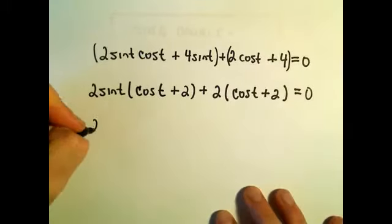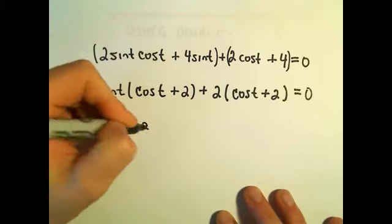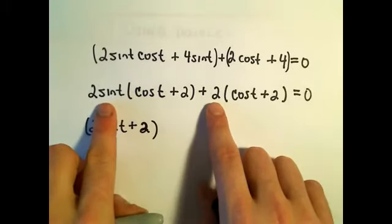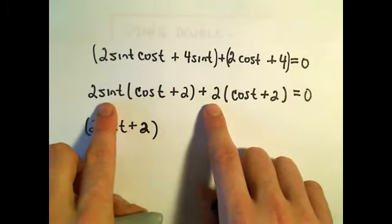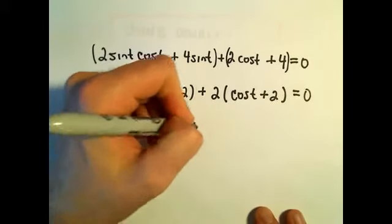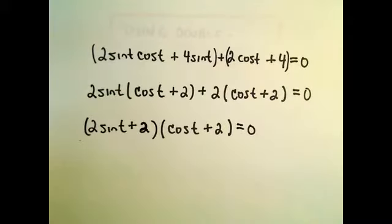And now when we do our factoring by grouping, we'll have 2 sine of t plus 2 in one set of parentheses. So again, recall, we take basically the stuff out front of the parentheses. We've got our cosine of t plus 2 equals 0 in our other set of parentheses.